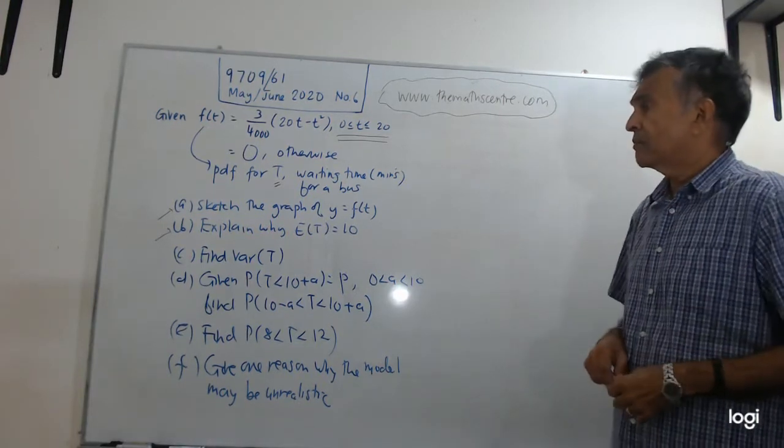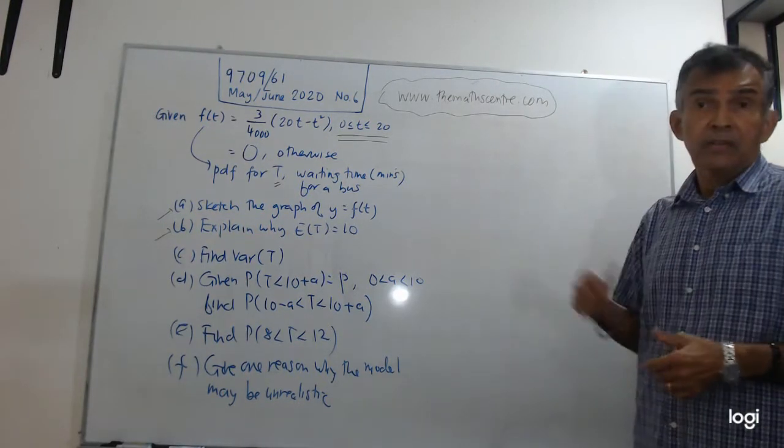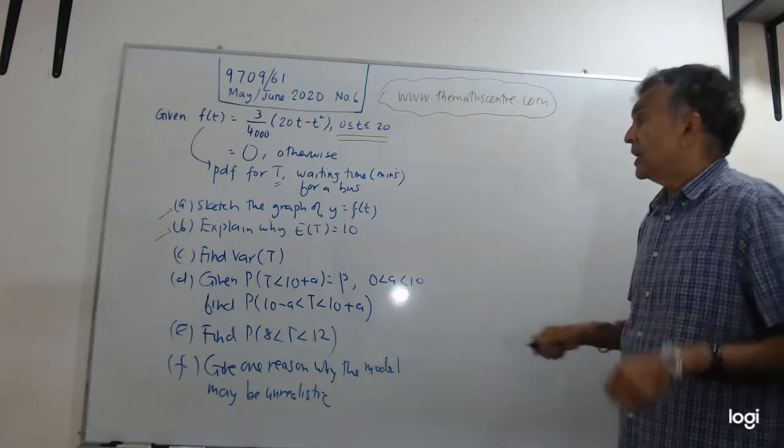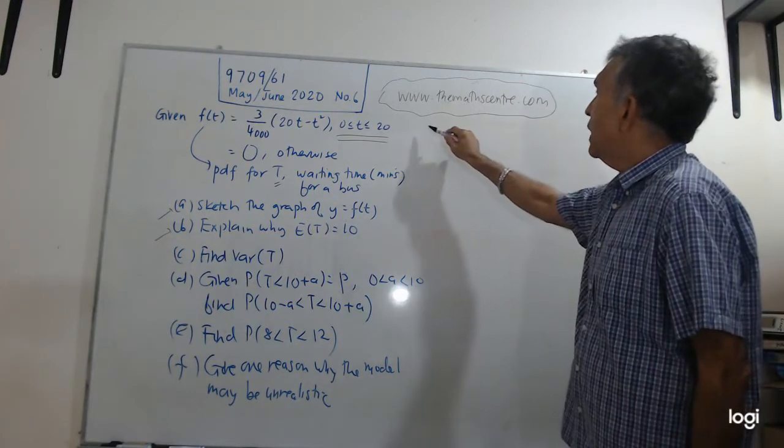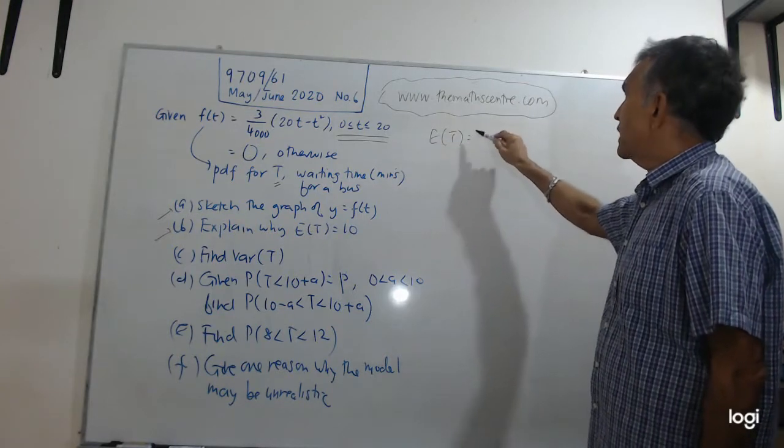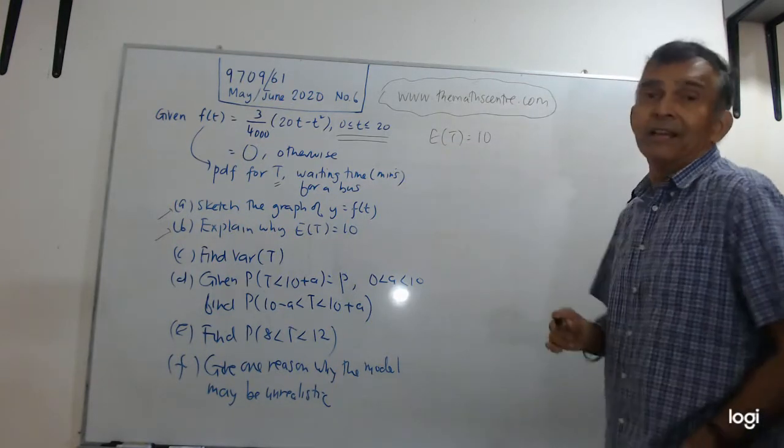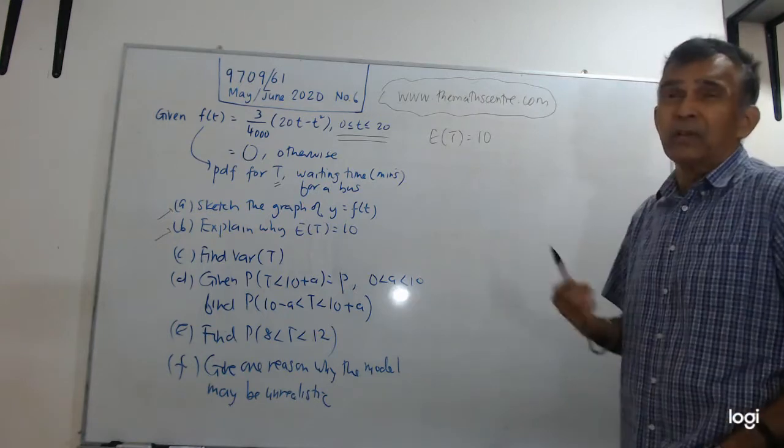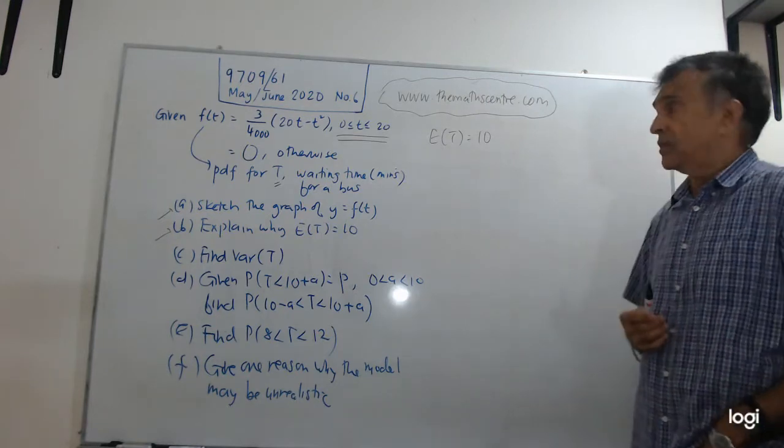Okay, so we are looking at part C. In part B we found that the expected value of T, or rather we showed why the expected value of T is 10. That's because of the fact that we're dealing with a symmetric distribution, a quadratic function.